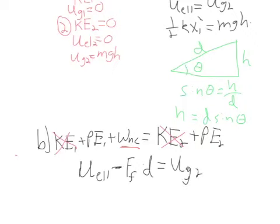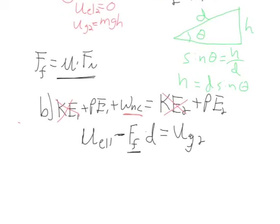Which will be equal to the friction force multiplied by that D distance, and that's going to be equal to u gravitational at point two. So you need to find what the force of friction is, keeping in mind the force of friction is equal to mu times the normal force.